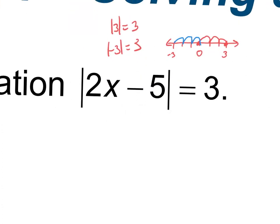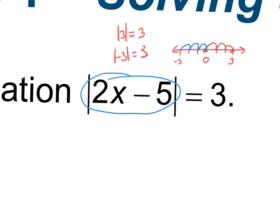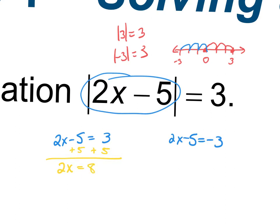My absolute value is isolated, so I'm going to say 2x minus 5 equals 3, and 2x minus 5 equals negative 3. We're going to set two equations — one to a positive answer, one to a negative answer. Adding 5 to both sides gives 2x equals 8, divide by 2, x equals 4. Then adding 5 to both sides of the other equation gives 2x equals 2, divide by 2, x equals 1. We've got two solutions.